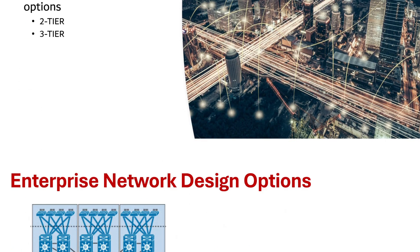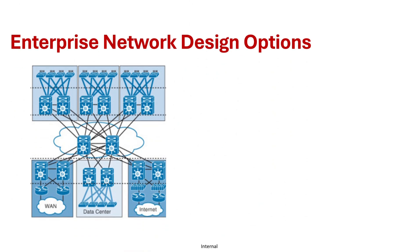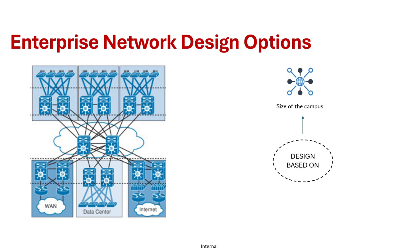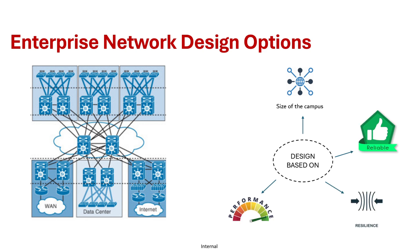When deploying a campus network there are several architectural design options to choose from, and you choose the design option based on factors such as the size of the campus, the need for reliability and resiliency, the performance and security requirements, and the desired level of scalability.